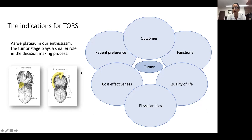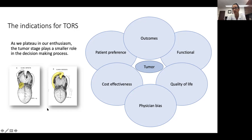Some of us are looking at cost effectiveness and others weigh more heavily patient preference. Many patients will come in very concerned about one treatment or the other for all kinds of reasons. As we plateau our enthusiasm, tumor stage may not be the most important thing in making the decision — there may be these other issues we really have to seriously consider. For example, a base of tongue tumor may be a chip shot for robotic surgery, but what would you do with a tumor that came up onto the palate? Some would say that's an indication for non-surgical therapy, while others believe the morbidity of palate destruction from radiotherapy would justify a surgical approach and a reconstructive option could give a patient a better functional outcome.